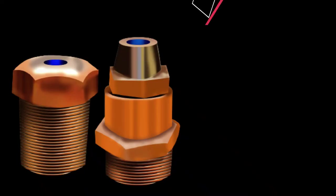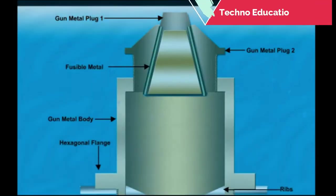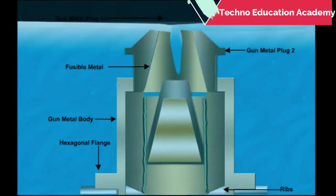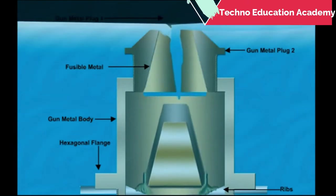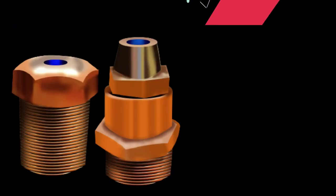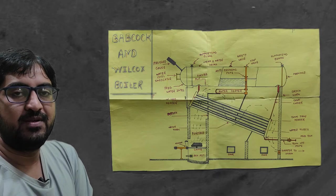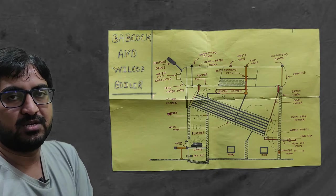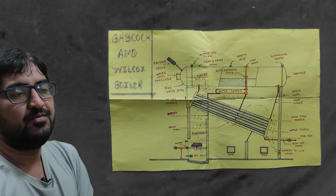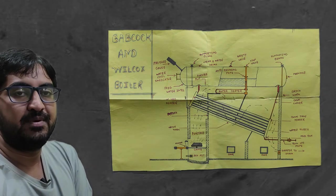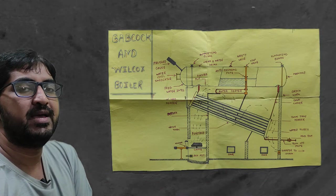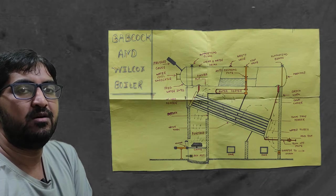The fusible plug is generally mounted on the combustion chamber side. Whenever the water level decreases, the plug comes into contact with steam and cannot withstand the temperature, so it melts and steam enters the combustion chamber, stopping the combustion. The main objective of the fusible plug is to provide safety against overheating of the tubes.